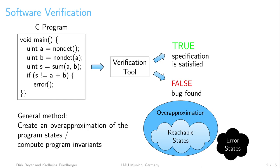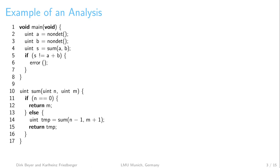Several verification tools simply enumerate the reachable state space and do not take care of the structure of the program. This causes problems, which we will show with the following example. This example program computes the sum of two non-deterministically initialized variables A and B. If the sum is correct, the program is valid; if the sum is incorrect, an error function is called and the specification is violated.